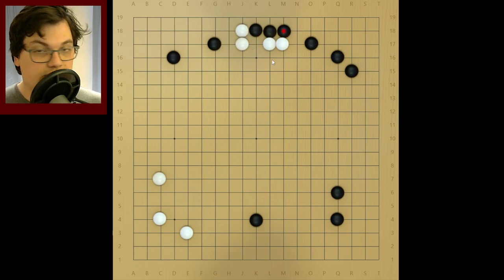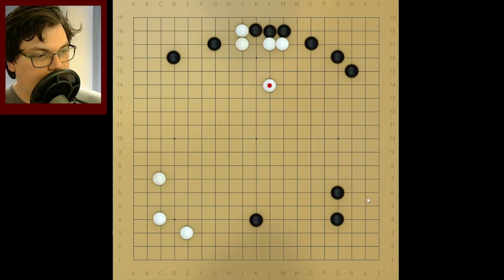And if White blocks on this side, Black just extends out. White has no eyes here, and has to run to try and live. Black has a nice game of attacking this for the rest of the game.